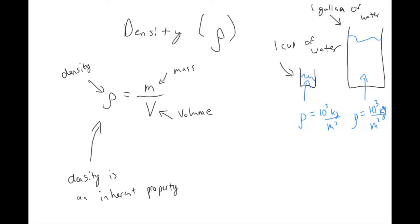Now if the density — the left-hand side of this equation — is the same, then if you look at the right-hand side, that means if my mass goes up, then my volume also has to go up. If my volume goes down, then my mass has to go down. So obviously one cup is less volume than one gallon, so the cup of water is going to have less mass than one gallon of water. That makes sense intuitively — if you tried to pick up a cup versus a gallon, one is heavier than the other.